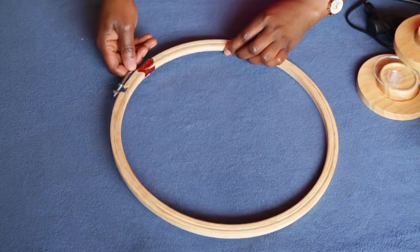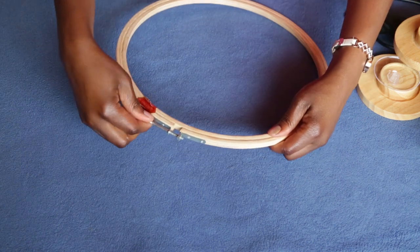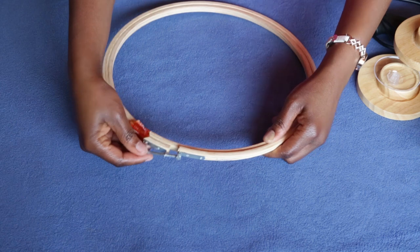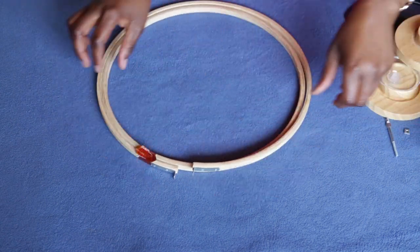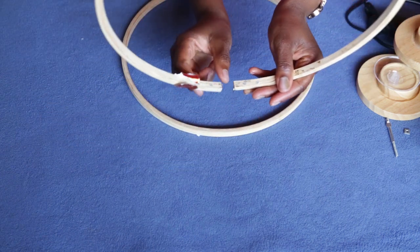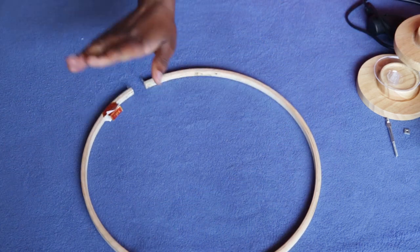So the first thing that I did was completely unscrew the outer hoop and separate these two. For this project I want to use this outer one because of the spacing so that I can be able to manipulate it, so this is the one that you're going to use.